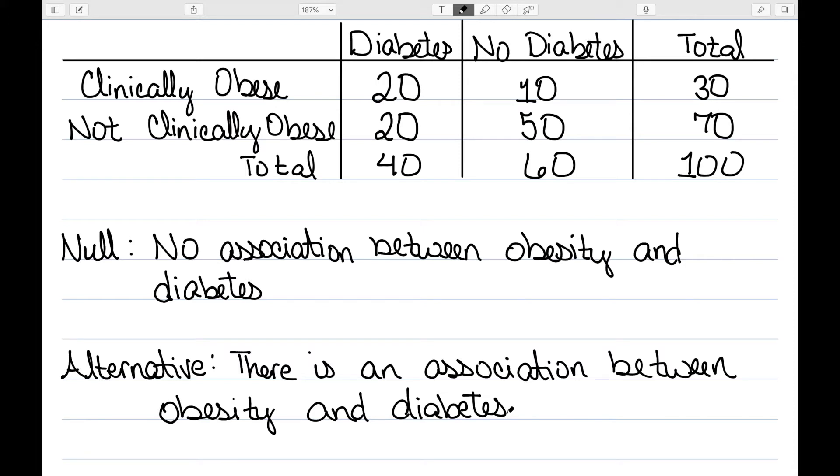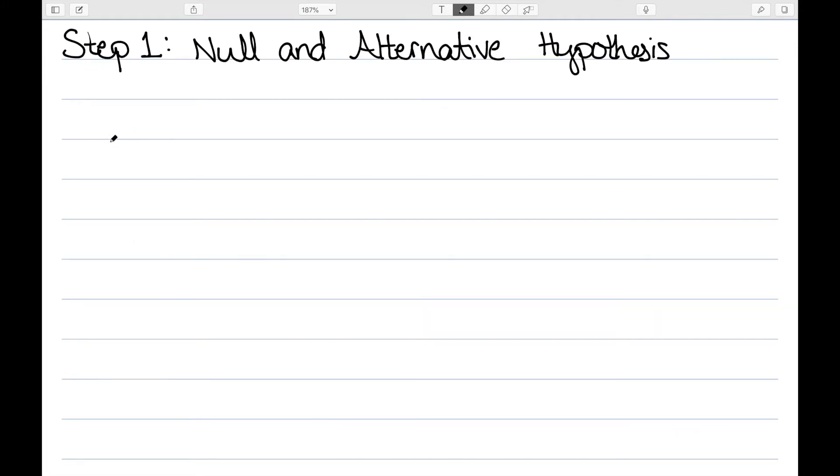Chi-square analysis is a way to test these associations between two-way tables, as we see here. So what we did here was step one, build the hypotheses. Step one, build our null and alternative hypothesis.